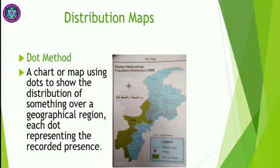The dot method is a chart or map using dots to show the distribution of something over a geographical region, with each dot representing a recorded presence. In this method, the distribution of different things is shown through dots. Whenever we draw a map, we put dots to show the population, greenery, or forest area, and each dot represents a specific quantity.